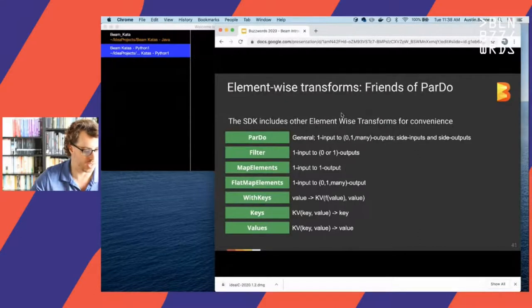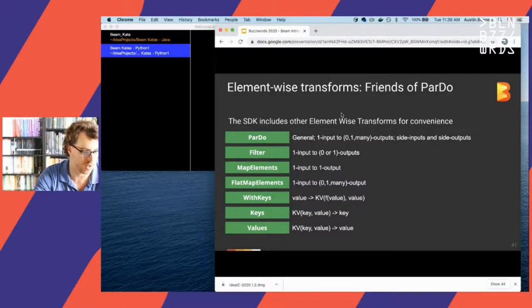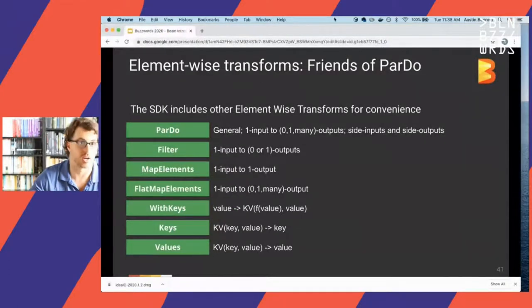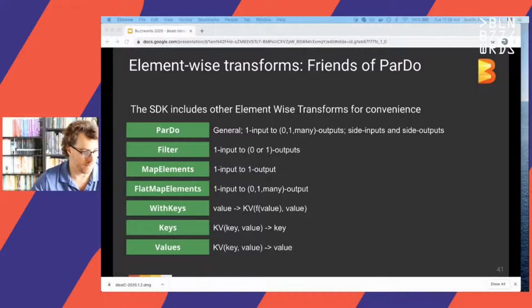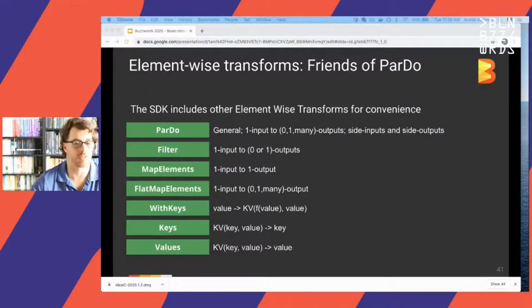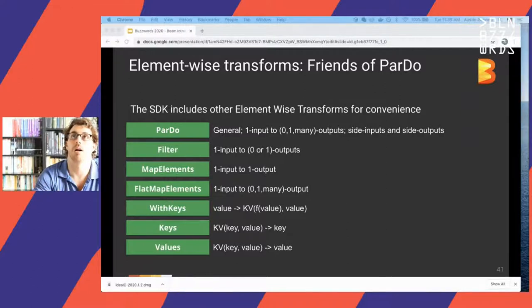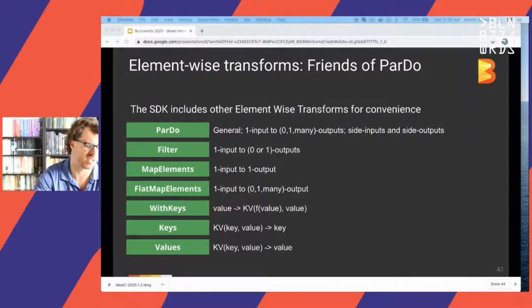I really want to reinforce that although something like ParDo and these transformations may seem super basic, they are actually so fundamental — and a whole lot of these things, when added together, become very powerful. Feel free to play with the exercises, especially the beam.map exercises, because they accomplish fundamentally the same output as the parallel do.